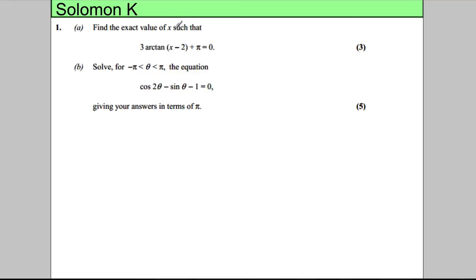In this question we're asked to find the exact value of X such that the following is true. So we're dealing with 3, arctan means tan inverse, so tan inverse of X subtract 2 plus pi is equal to 0.